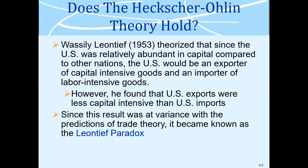Leontief theorized that since the US was relatively abundant in capital compared to other nations, the US would be an exporter of capital-intensive goods and an importer of labor-intensive goods. While Ricardo gave the comparative advantage theory, he said that a country that should export a resource should be one that has more capital. So countries in the world will eventually end up importing from countries who have more capital.